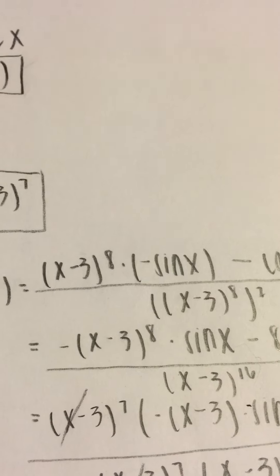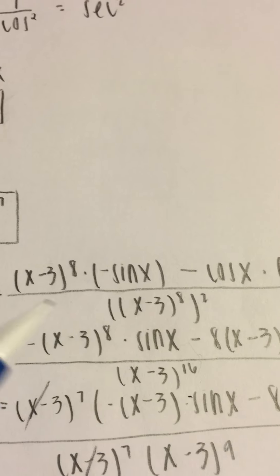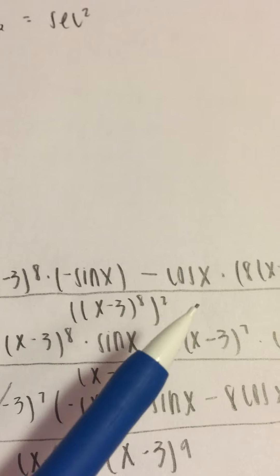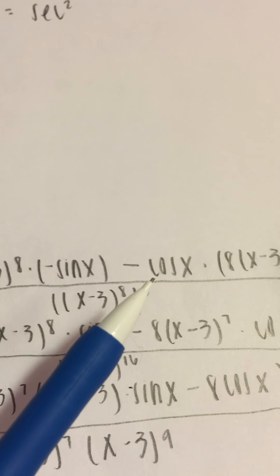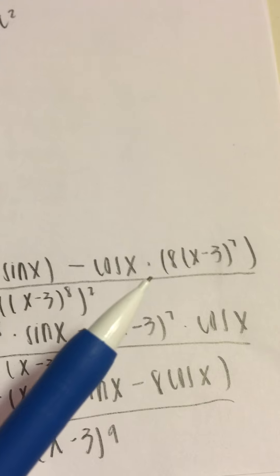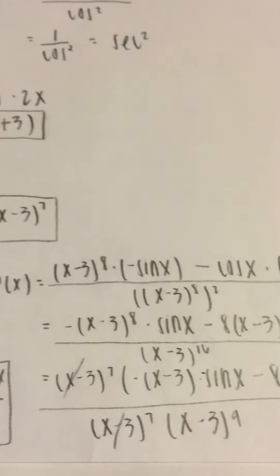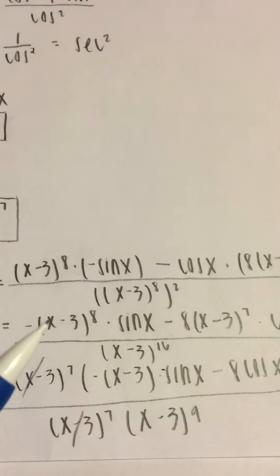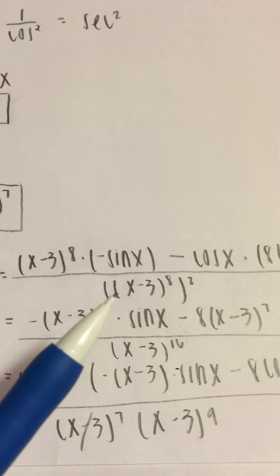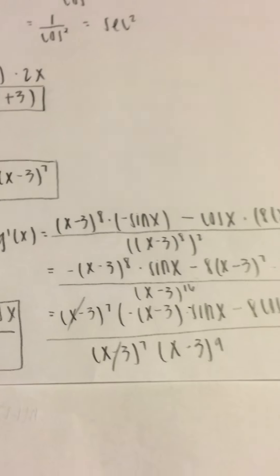The top function is cosine x, so its derivative is negative sine x. Then we subtract the top function cosine x times the derivative of the bottom function, which is 8 times x minus 3 to the seventh power. All of this is over the bottom function squared, giving x minus 3 to the eighth power squared.